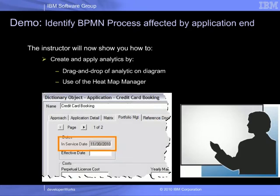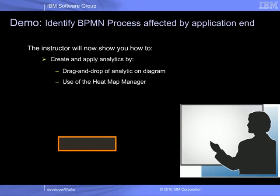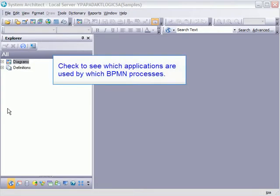The analytic will graphically identify BPMN processes that use applications that have an in-service date prior to 12-30-2010, for example. An in-service date is a property in an application that represents a date up to when a particular application is in-service — for example, when your license for that application expires. You will create an analytic report, associate it with an analytic definition, and run the analytic by drag and drop. Then we will make the analytic part of an analytic collection and run it again via the heatmap manager.